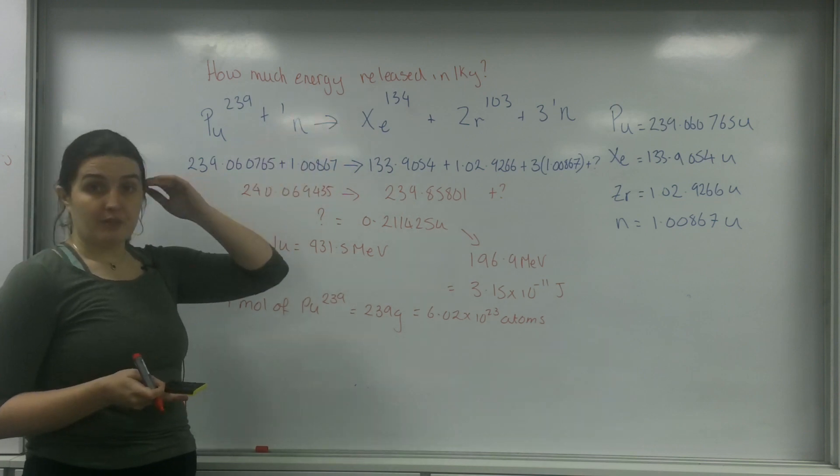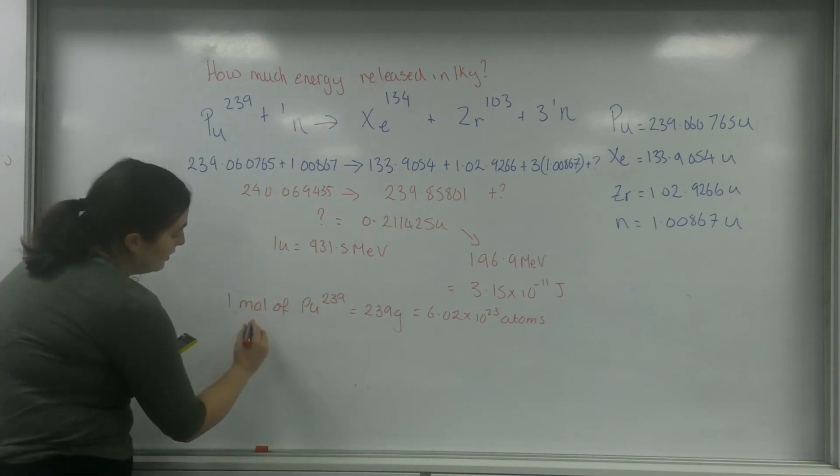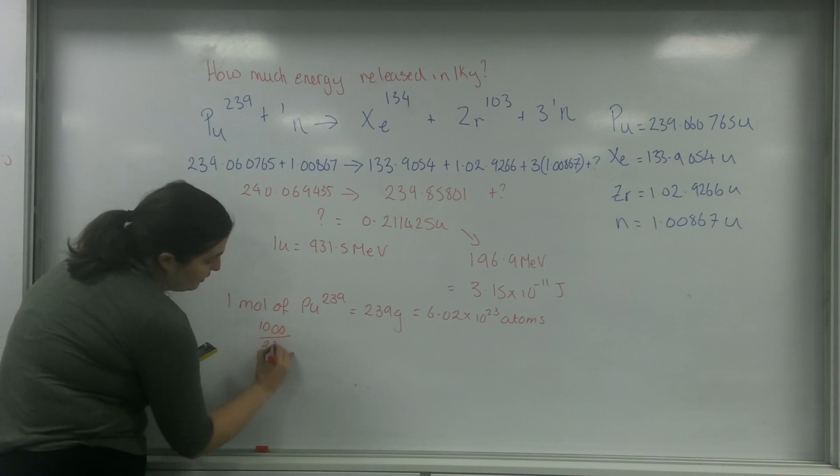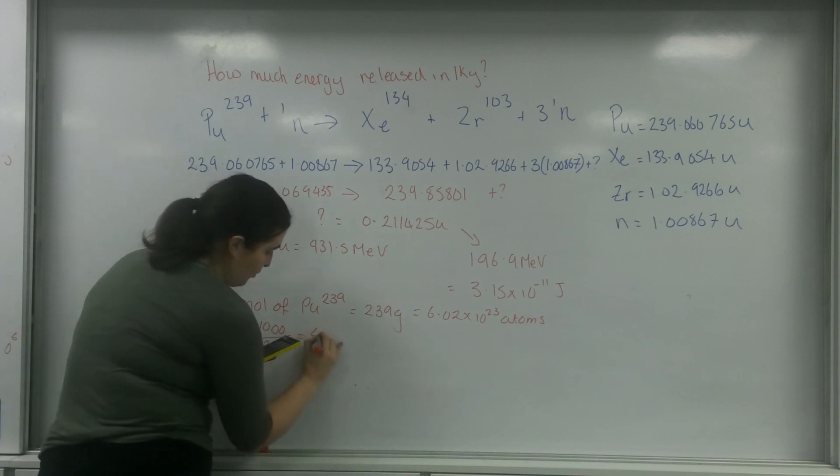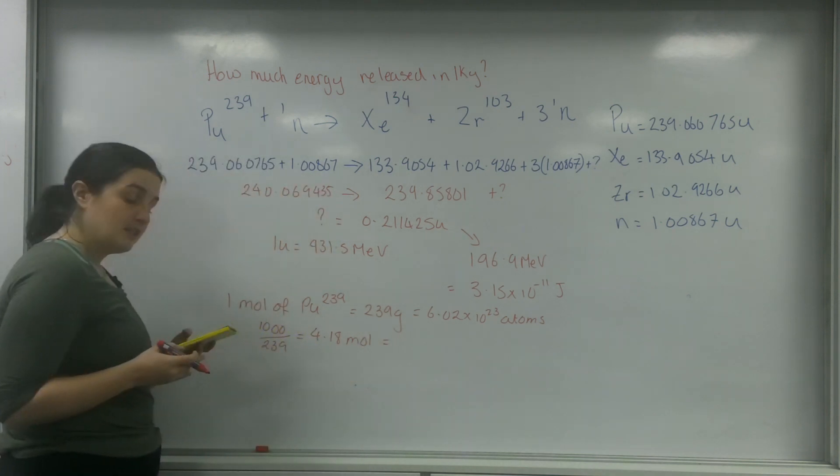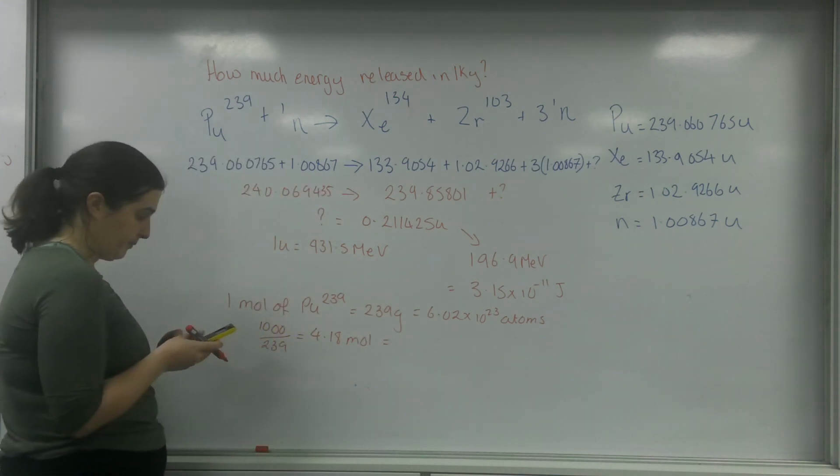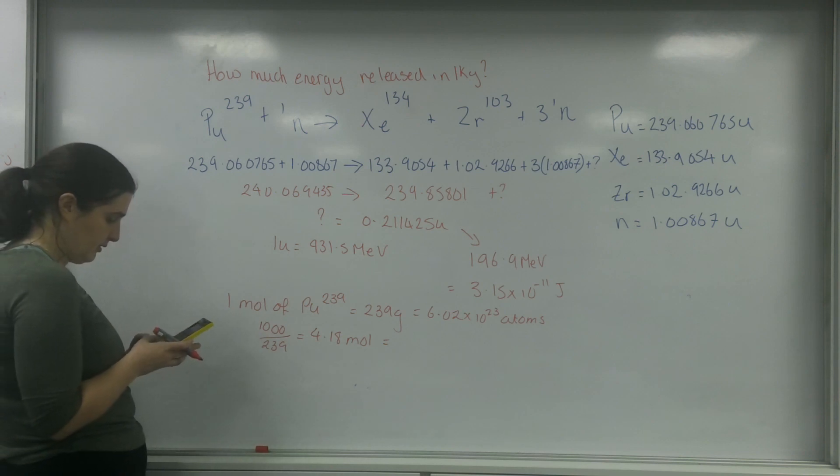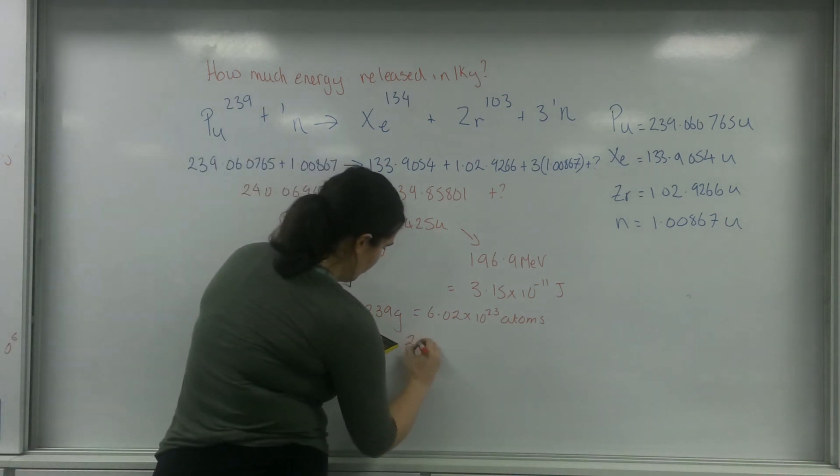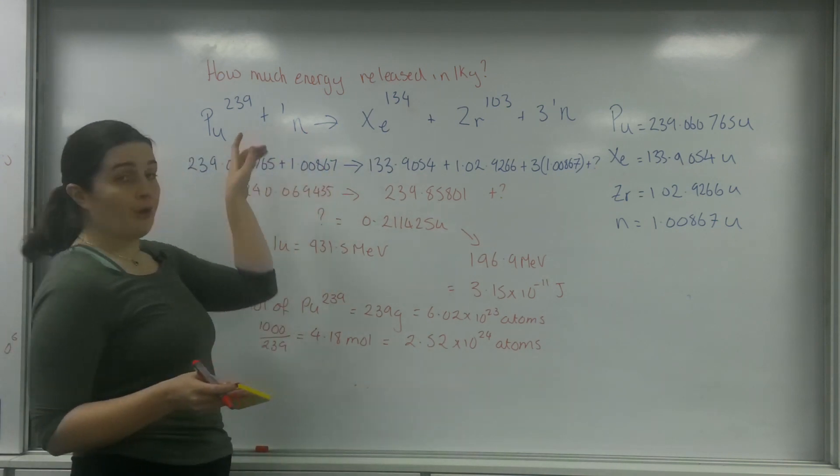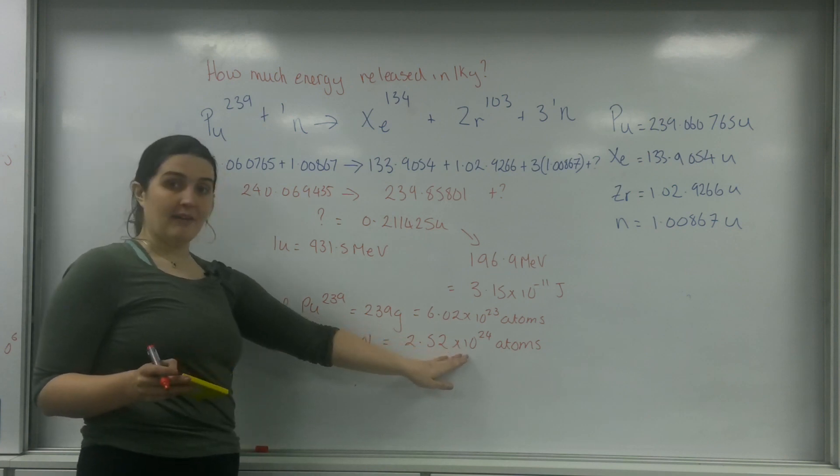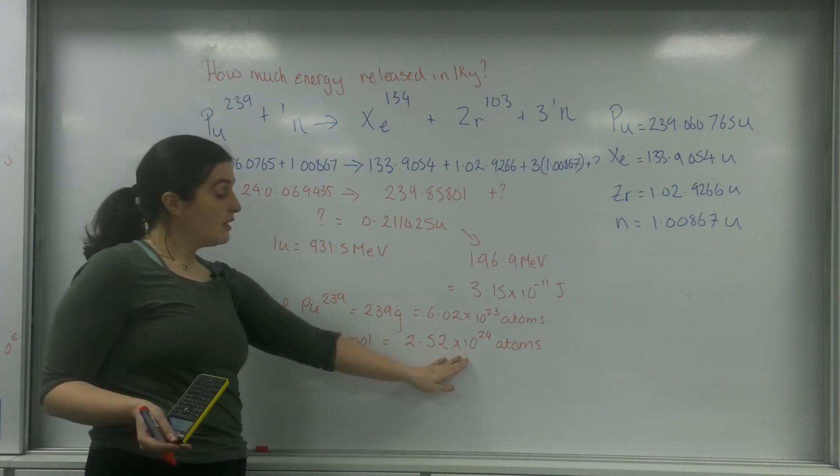I have a kilo of the stuff, so I need to find out how many moles I have. A thousand over 239 is 4.18 moles. This means in total I have 2.52 times 10 to the 24 atoms. I know that every reaction only requires one atom, so this is how many reactions I'm going to have.